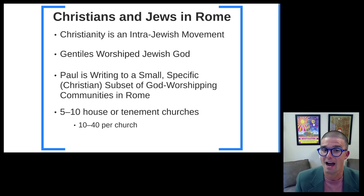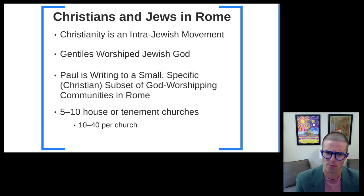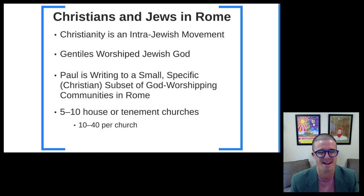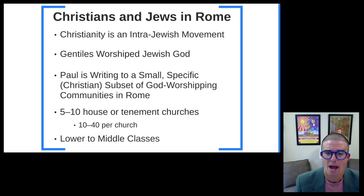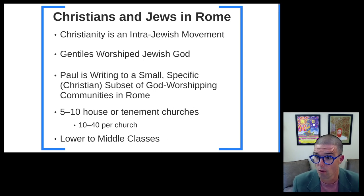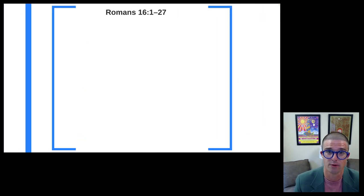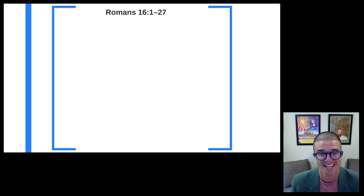Paul is not writing to Judaism at large, nor even to God-fearers at large — he's particularly writing to those who are Christians, who have accepted the message about Jesus' life, ministry, death, and resurrection. To estimate what this looked like in numbers, we probably have somewhere between five and ten house or tenement churches — 'tenement' meaning apartment churches — and within these five to ten churches, probably ten to forty persons per church. That means we're looking at somewhere between 50 and 400 persons total that Paul is writing to.